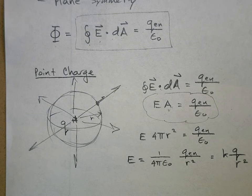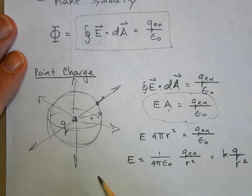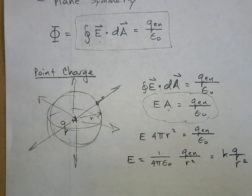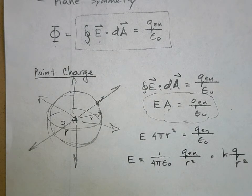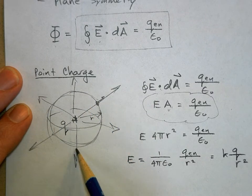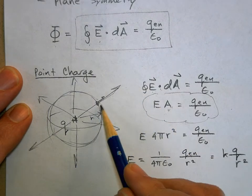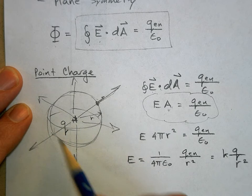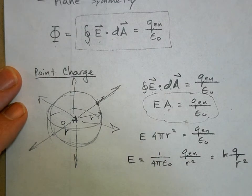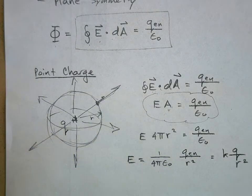This was a bit circular because we used a point charge to derive Gauss's law in the first place. There is a rigorous proof in the book that doesn't depend on a point charge — it's more general, so read about that. Notice that e is the same everywhere on the Gaussian surface since we're at the same distance r, so e is constant and the integral of da equals A.